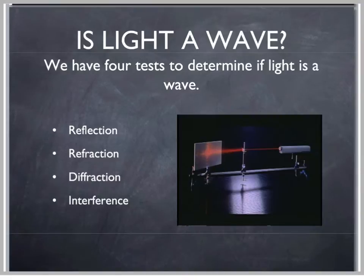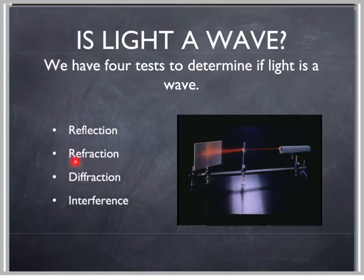The four things are: reflection — we had water waves bouncing off of a yellow boundary, and we found that there is a relationship between the waves coming in and the waves going out: the angle of incidence equals the angle of reflection. So we want to see, does light do that? There's refraction, or bending — when light goes from one medium to another, does it bend? Because in the ripple tank, when water waves went from a deep end to a shallow end, they change direction, which is called refraction. We want to see if light does that.